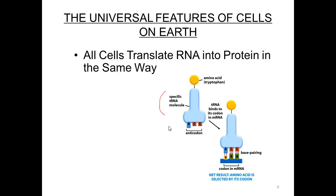This slide shows tRNA molecules, which are the molecules that convert the nucleic acid code into the identity of an amino acid, which will then be incorporated into a protein as the instructions are read on a strand of messenger RNA. The tRNA base pairs to the mRNA, just like the DNA double helix, assuring the proper positioning of that amino acid.